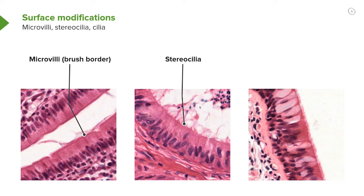Stereocilia are found in parts of the male reproductive system, particularly the ductus epididymis. They also appear as very special stereocilia in the hair cells in the ear, which we'll discuss more when we look at the ear in a later lecture. On the surface of cells on the right-hand side, previously shown in pseudostratified epithelium, there are cilia — long hair-like structures projecting from the cell. This is sometimes called pseudostratified ciliated epithelium, found particularly in the respiratory tract.